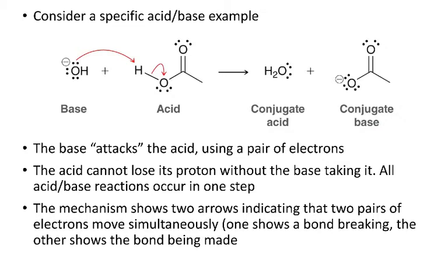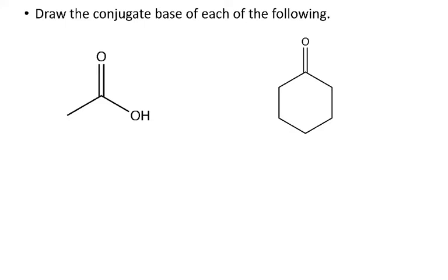When we draw a mechanism and we're drawing two arrows in one step, we're saying those steps are happening simultaneously — so this is a concerted mechanism. Let's do a couple of practice problems to end this video.